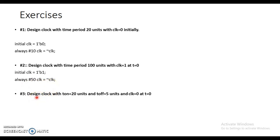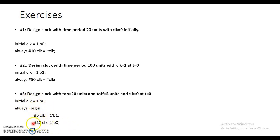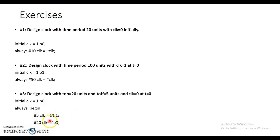The third problem: design a clock with t_on equal to 20 units and t_off equal to 5 units, initially zero. Within the always block we have two statements, so we use begin and end. After 5 units (t_off), clock goes high; after 20 units (t_on), clock goes low. So the clock remains high for 20 units and low for 5 units.